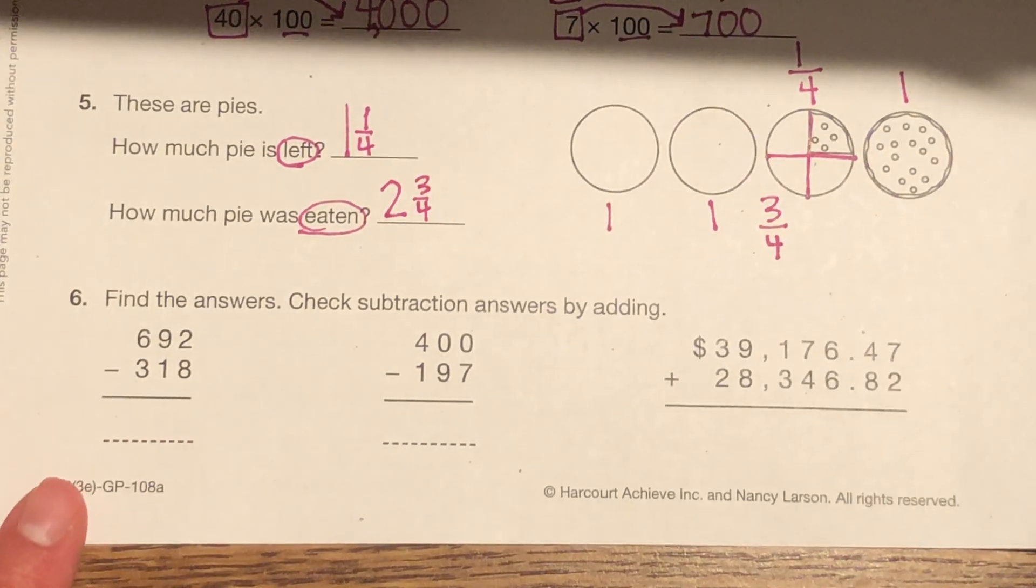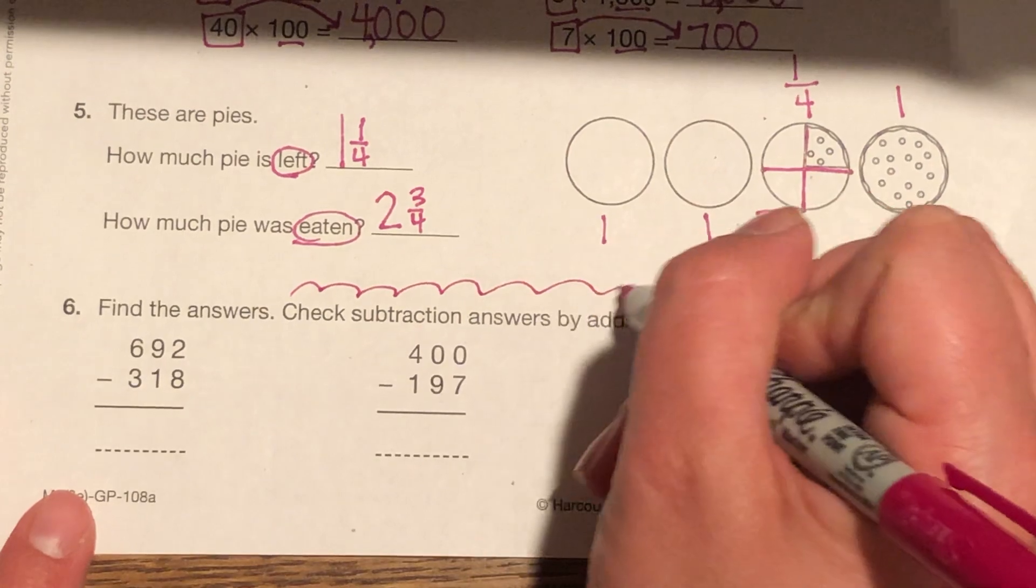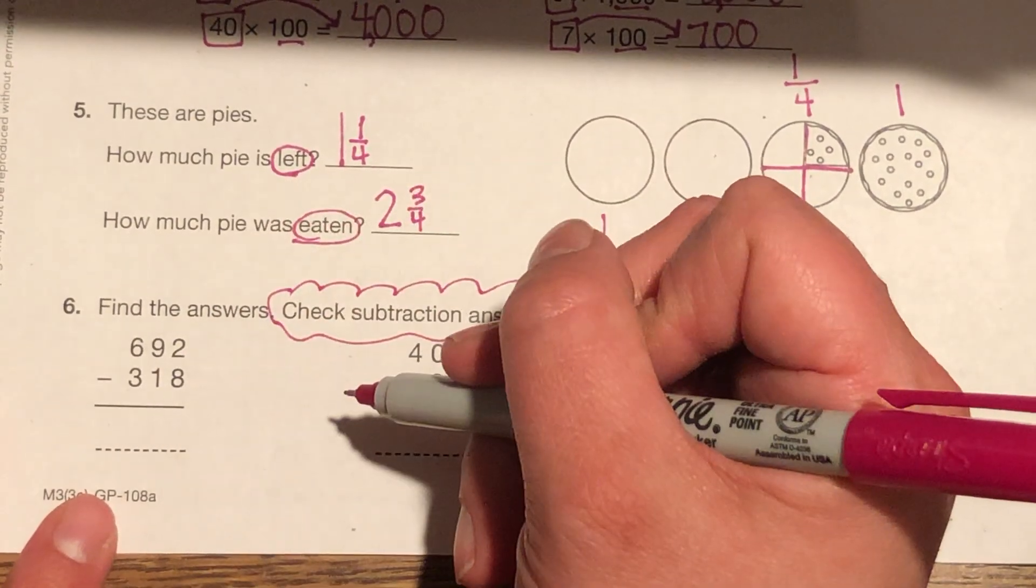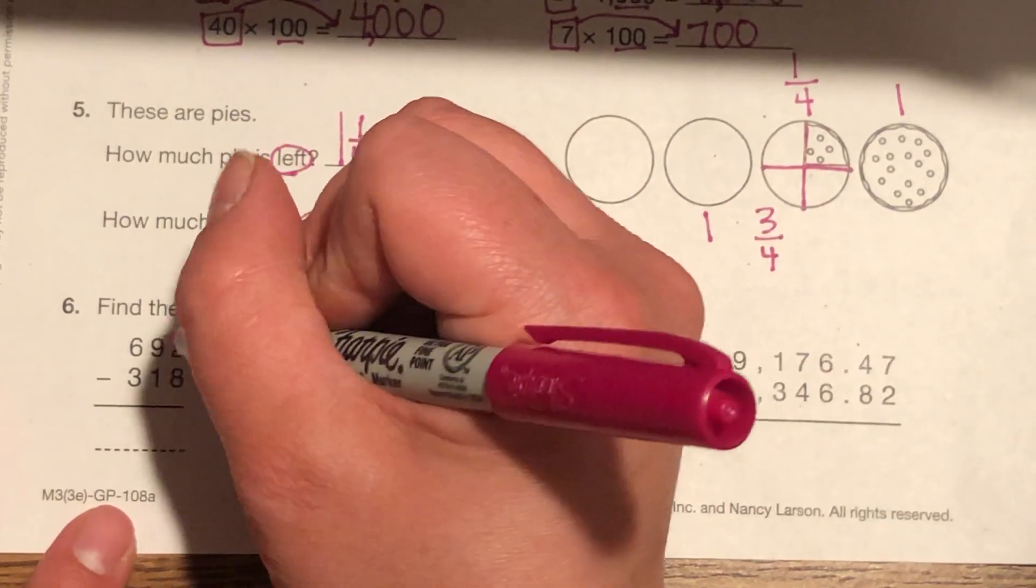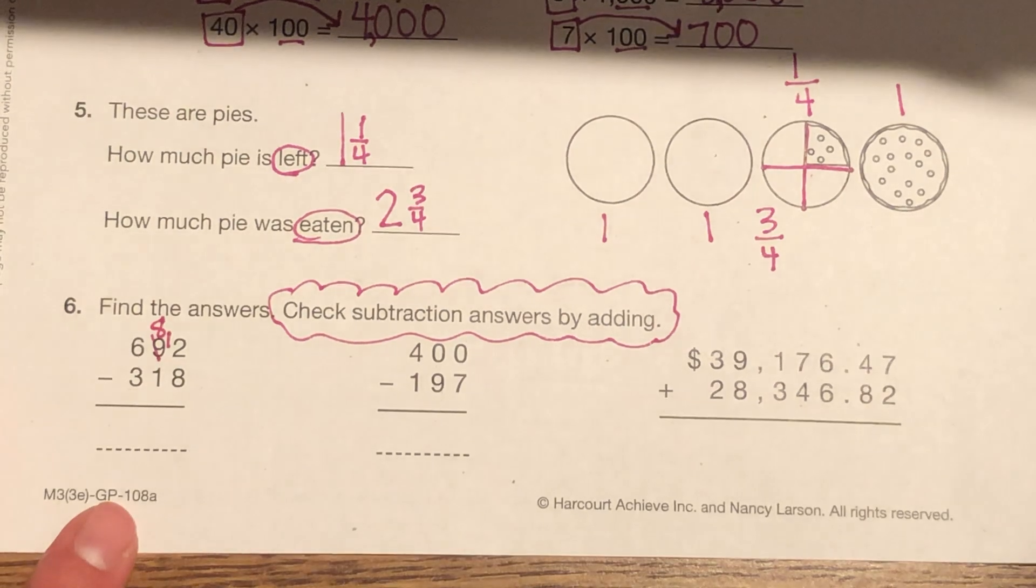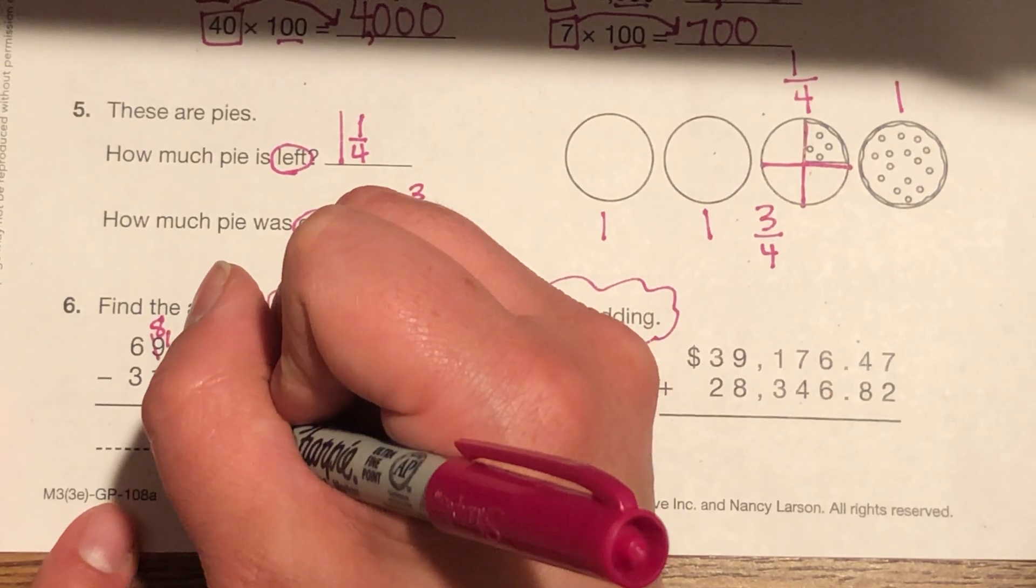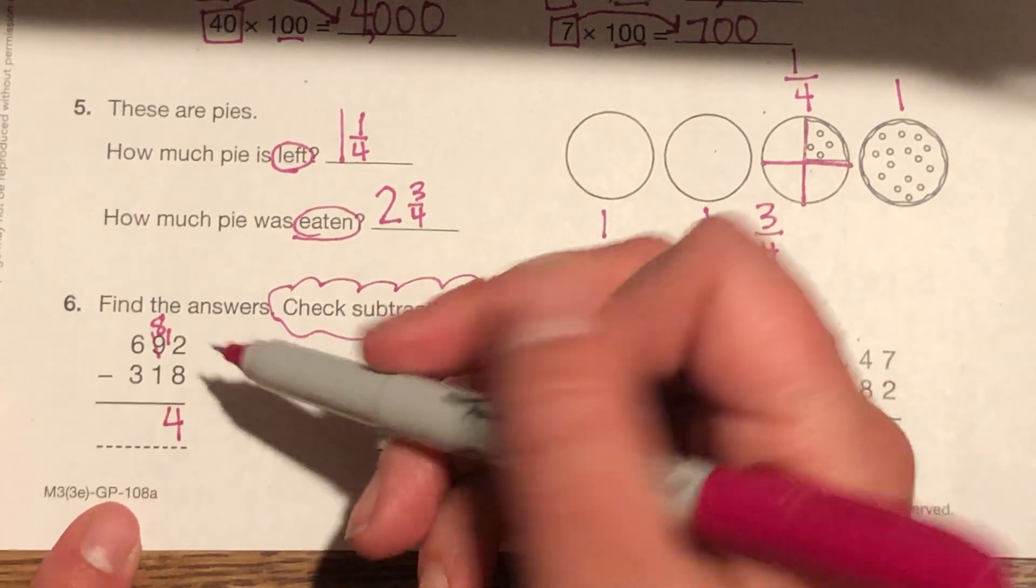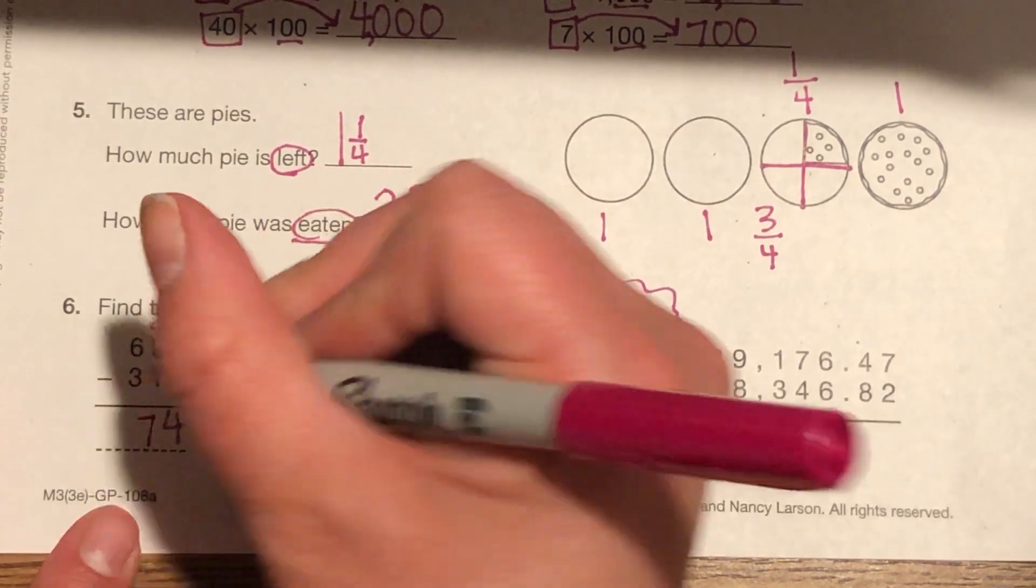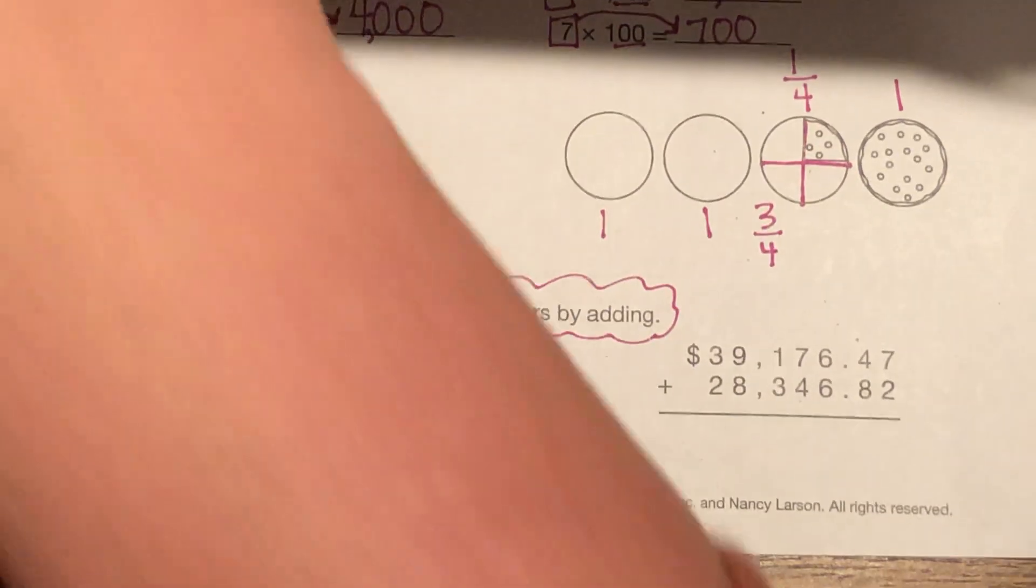Find the answers and check subtraction by adding. I'm going to make a fun little cloud there because it's so important. So, let's subtract. Cannot take eight away from two. So, I'm going to borrow here. I'm going to borrow from the nine, make it an eight. The two becomes a twelve. Twelve minus eight is four. Eight minus one is seven. And six minus three is three.